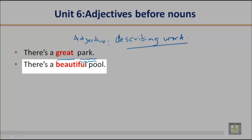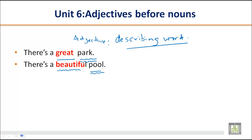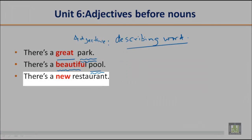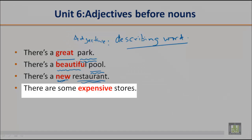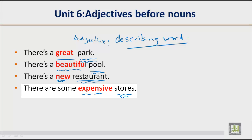There's a beautiful pool. How is the pool? This is the noun and beautiful is the adjective — it's beautiful. There is a new restaurant. How is the restaurant? It's new. There are some expensive stores. How are the stores? They are expensive.